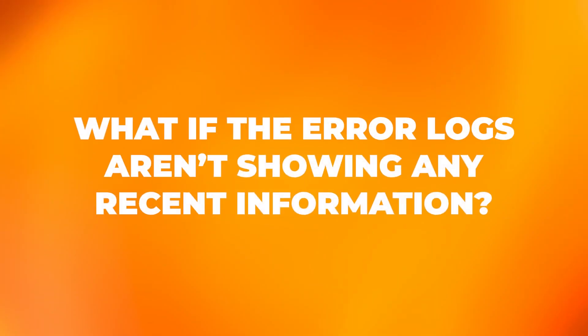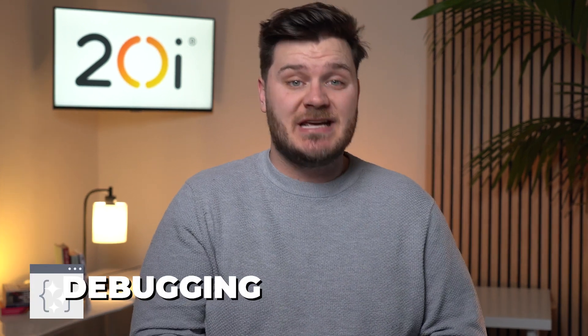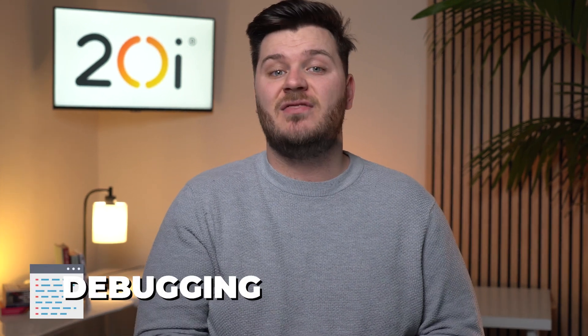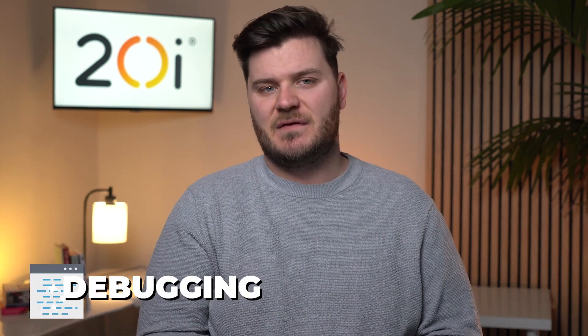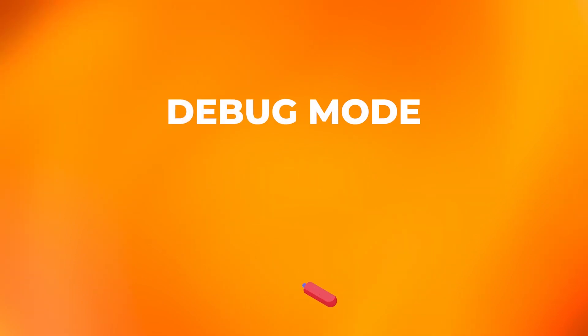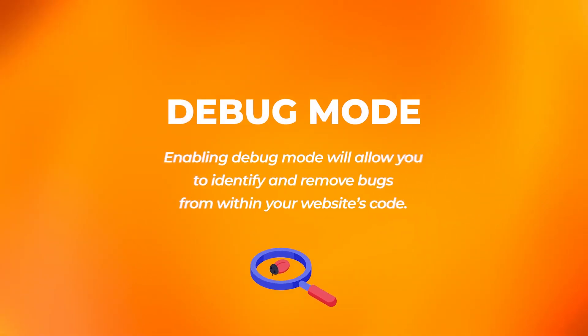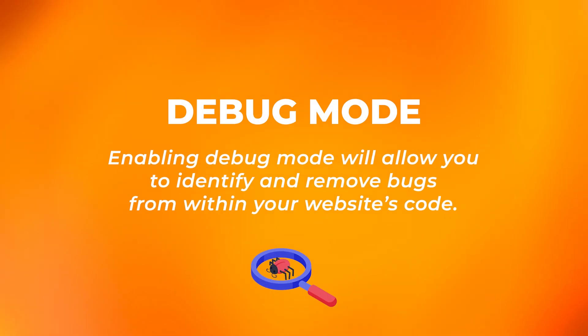What if the error logs aren't showing any recent information? If there are no recent error logs, you can enable debugging from within the WordPress config file. Enabling debug mode will allow you to identify and remove bugs from within your website's code.